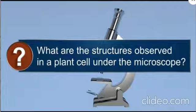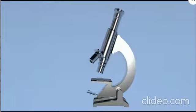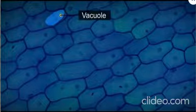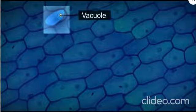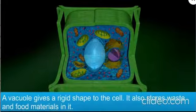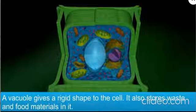What are the structures observed in a plant cell under the microscope? A big, empty space seen at the center of the cell is called the vacuole. A vacuole gives a rigid shape to the cell.